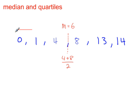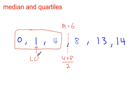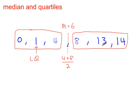Then take the lower half of your data. The middle number there is 1. That's the lower quartile. Take the upper half of your data — the middle number there is 13. So that's the upper quartile.